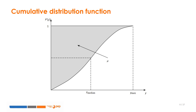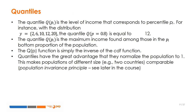We now represent graphically the cumulative distribution function. On the horizontal axis, we have our wellbeing indicator y — for example, income. On the vertical axis, we have the cumulative density, i.e. the percentage of individuals with an income inferior or equal to y.